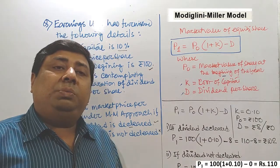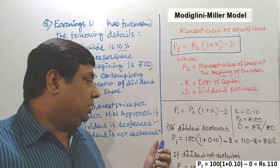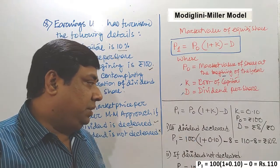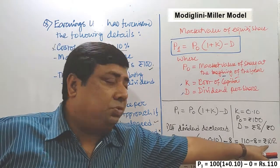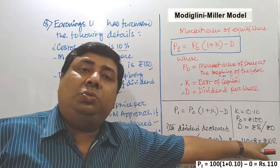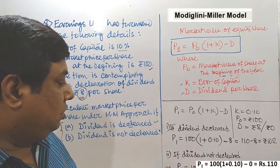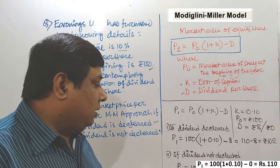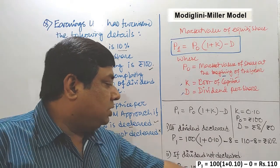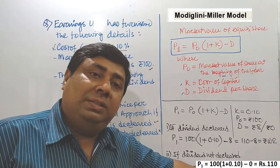Depending upon the options: if the company pays dividend, the market value per share comes to Rs.102. If the company does not pay dividend, the market value per share comes to Rs.110.